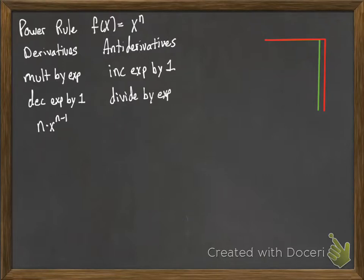In terms of an actual formula, if we had x to the n as our function, we then increase the exponent by 1, which would give me x to the n plus 1. And then finally, divide by that exponent, which is n plus 1.